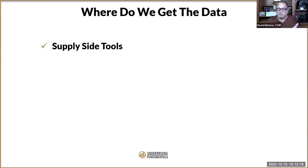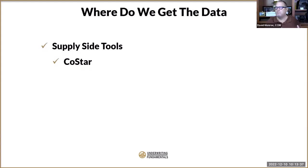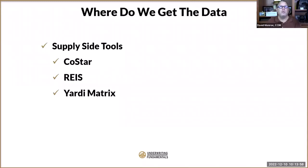What supply side tools are we going to use? I specifically use CoStar. They are the only tool that provides data under 50 units and outside of the top 135 markets. Every other tool — whether Reese, Yardi Matrix, or Axiometrics — only provides data for over 50 units and only in the top 135 markets. CoStar, because they own Apartments.com, was able to aggregate data in every market in the country — currently 390 MSAs out of 396 defined by the federal government.